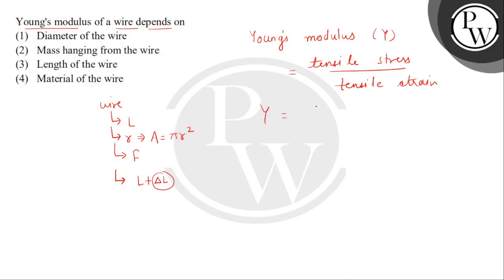So, the value of Y we get is force divided by area — because this is stress — and strain is delta L divided by L.